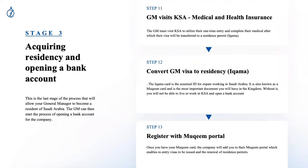Step eleven: the GM visits KSA. They need to complete a medical again in Saudi Arabia and obtain local health insurance. Our AstroLabs team will accompany you through all of these steps. Importantly, even if you have international health insurance, you need a local Saudi health insurance policy to complete the iqama process.